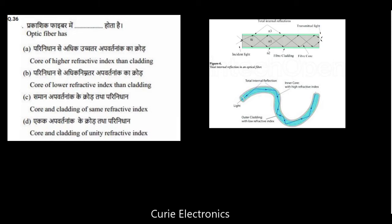This is the last question. Optic fiber has core of higher refractive index. Now that we know. The core refractive index, that is n1, you should remember like this: a core refractive index should be higher than the cladding refractive index. So which is the answer? Core of higher refractive index than cladding. So the answer is option A is D.